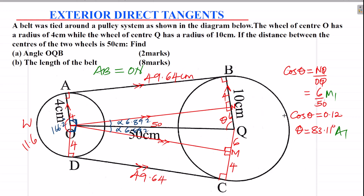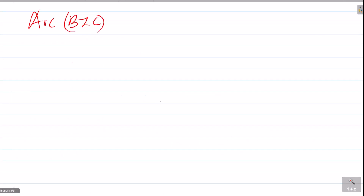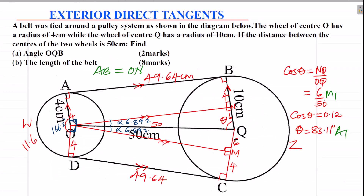Now on the bigger circle, we have arc BZC. We need to get the whole angle subtended by that arc. Since we already got 83.11 degrees, that angle is the same as the other one remaining. So we just multiply by 2: 83.11 times 2, because of the other equal angle. That gives 166.2 degrees. We need to get the angle on the other side, so we take 360 subtract 166.2.